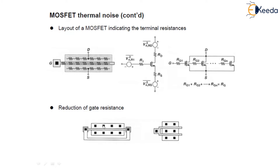The resistance is reduced to Rg/4. Alternatively, in figure B, the transistor can be folded so that each gate finger exhibits a resistance of Rg/2, giving an effective distributed resistance of Rg/4 for the composite transistor. This folding technique and adding contacts to both sides are done to reduce the gate resistance and thereby reduce the thermal noise.